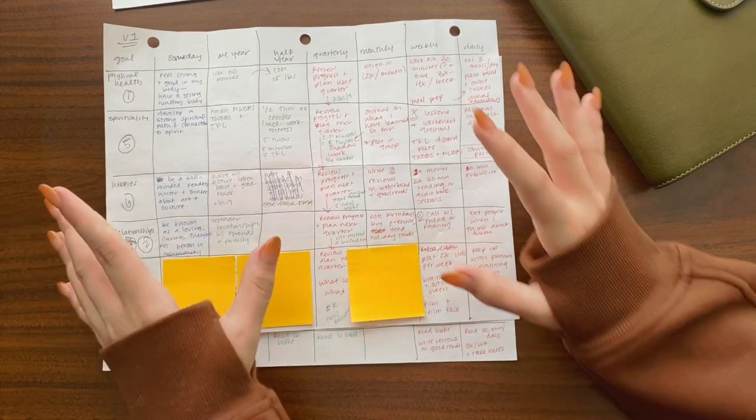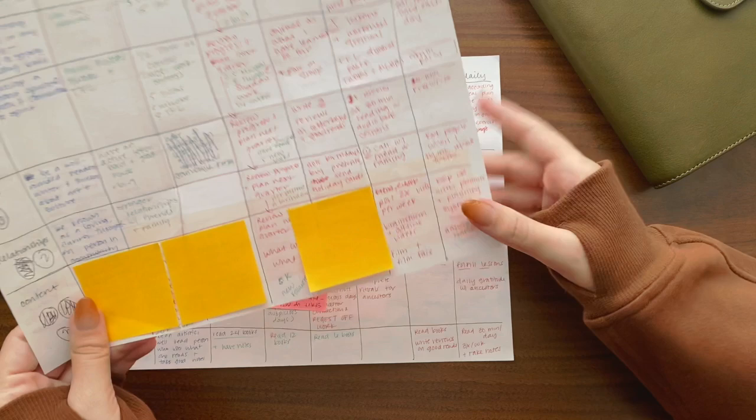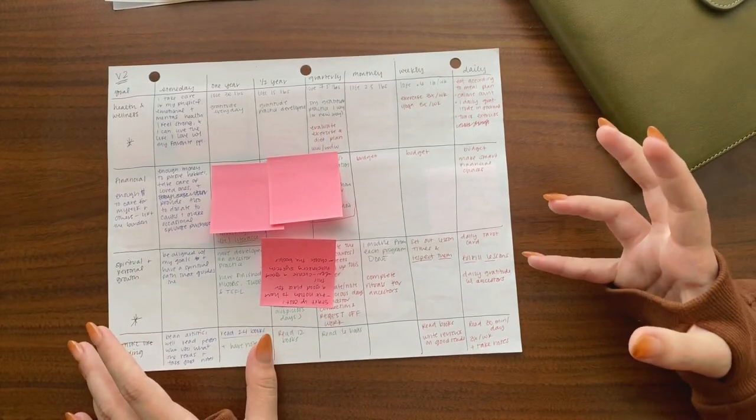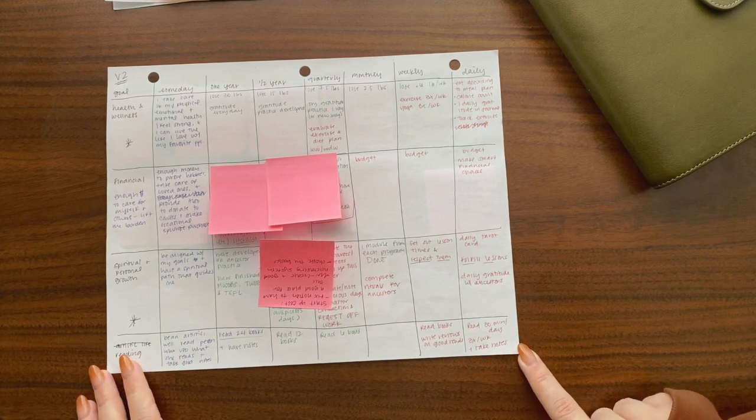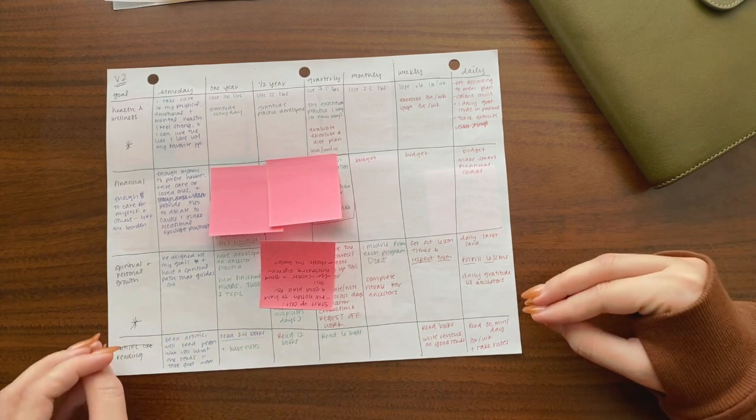I took hobbies, which was be a well-rounded reader, writer, thinker about art and culture. I took this goal, which meant recording all movies and all books in a public place. I had a specific amount of Letterboxd and Goodreads stuff that I had to do on a monthly basis. I had writing goals in this hobbies section. This hobbies section was like six goals in one goal. It was crazy. So I ended up just breaking that out into I just want to read more.